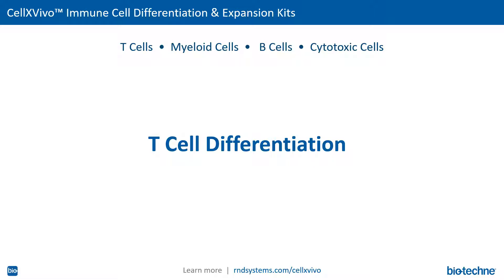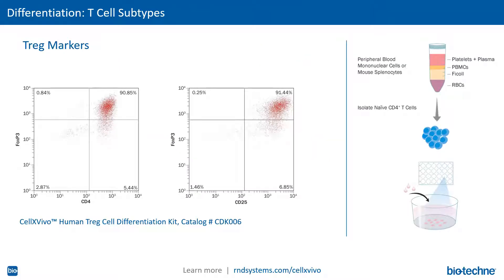I'd first like to highlight kits we have to differentiate various T-cell types. T-cell differentiation kits are available for both human and mouse, and as the schematic on the right highlights, all start with the isolation of CD4-positive naive T-cells from PBMCs for the human kits or mouse splenocytes for the mouse kits. Our MagSelect cell selection kits can be used for this step.